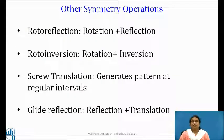In addition to these, there exists four hybrid operations. They are rotoreflection, rotoinversion, screw translation and glide reflection. Rotoreflection is a combination of an n-fold rotation followed by a reflection in a plane perpendicular to the rotation axis. Rotoinversion is a combination of an n-fold rotation followed by an inversion. In screw translation, n-fold rotation axis is coupled with a translation parallel to the rotation axis. And in glide reflection, a mirror plane is coupled with a translation parallel to the reflecting plane.